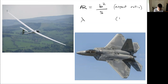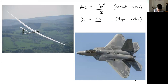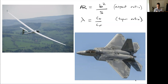Another parameter is taper ratio, lambda, defined as tip chord divided by root chord. For practically any airplane, this is a number less than or equal to one — the tip chord is less than or equal to the root chord. A taper ratio of one means a constant-chord Hershey bar wing; less than one means the wing tapers toward the tip.